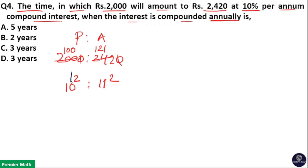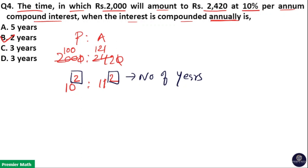The power is the number of years, so the number of years equals 2. Therefore, option B is the answer — ₹2000 will become ₹2420 in 2 years at 10% per annum compound interest.